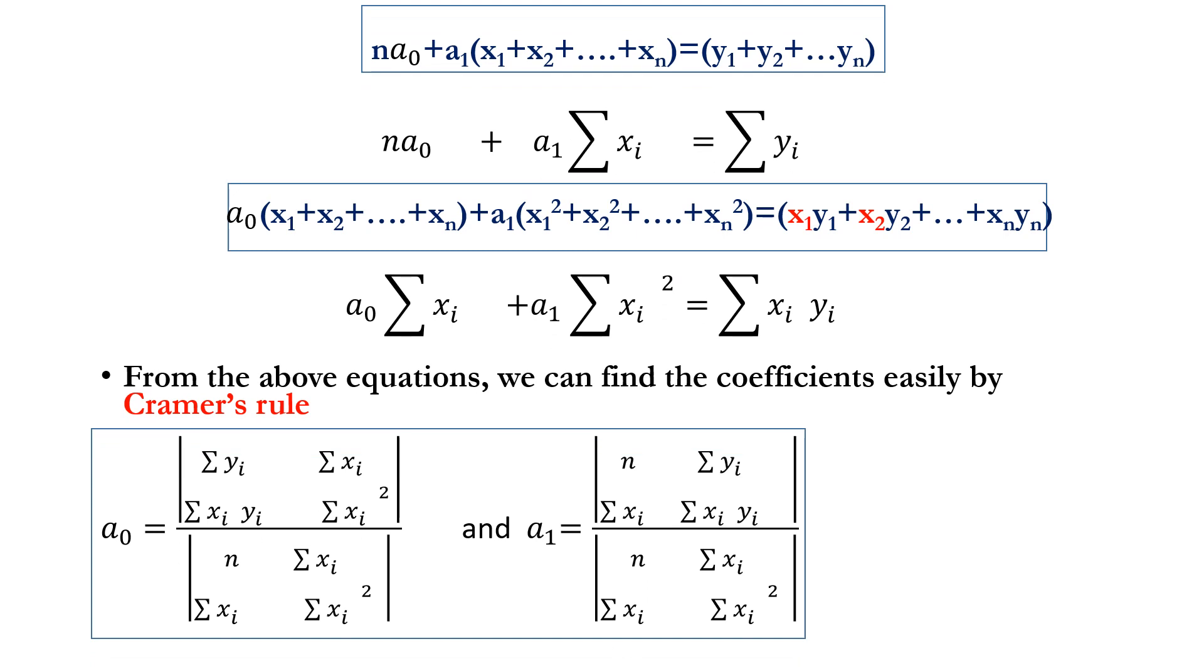Now we write the two equations in a simple format: n·a₀ + a₁·Σxᵢ = Σyᵢ, and a₀·Σxᵢ + a₁·Σxᵢ² = Σxᵢyᵢ.